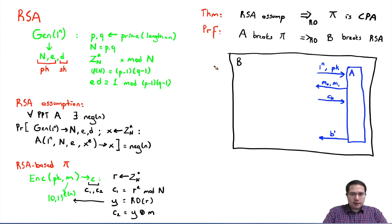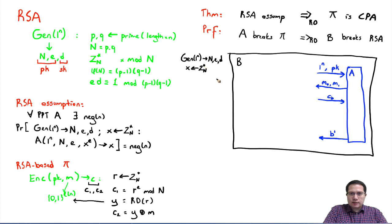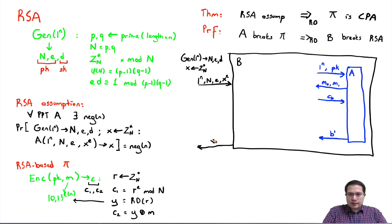On the other hand, what game is B playing? B is trying to break the RSA assumption. The RSA assumption says some challenger outside runs the gen algorithm to obtain n, e, and d. The challenger also picks some x from Z*_n. The challenger gives to B: the security parameter, n, e, and x^e. B's goal is to return x at the end.